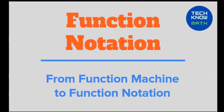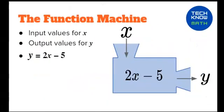Function notation from function machine to function notation. In the function machine, we input values for x and output values for y. In this machine, we'll input the values for x. Those will be multiplied by 2, 5 will be subtracted from that, and the output will be the y value.